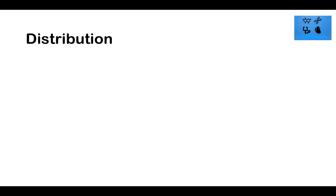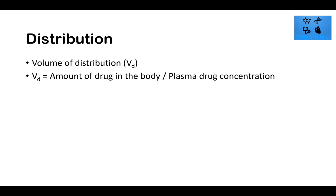Distribution describes where the drug goes after it's absorbed. There's a metric called the volume of distribution, which is the total amount of drug in the body divided by the plasma concentration. If you have a high volume of distribution, you don't have a lot of plasma drug concentration — plasma drug concentration must be low when VD is high. They're inversely proportional.